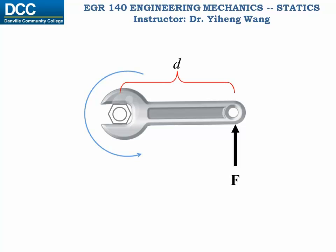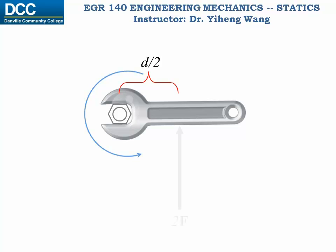And why is that? What would happen if we shorten that distance, say by half? From experience, we know we must apply a bigger force in order to create the same rotational effect on the screw. In fact, we need to double that force. Apparently, there's a certain quantity that needs to be achieved in order to loosen that screw.